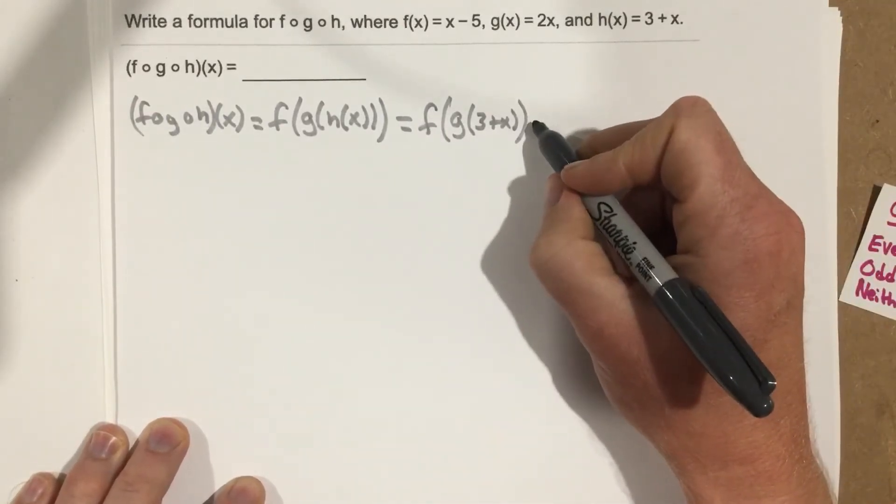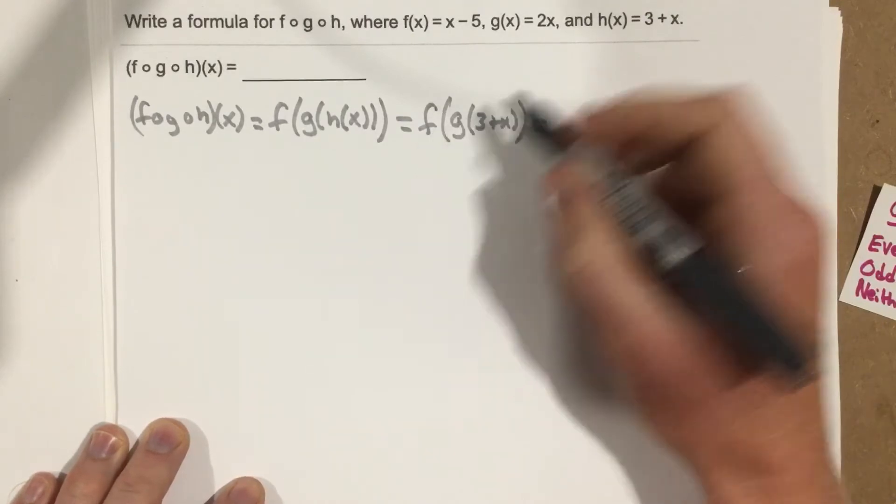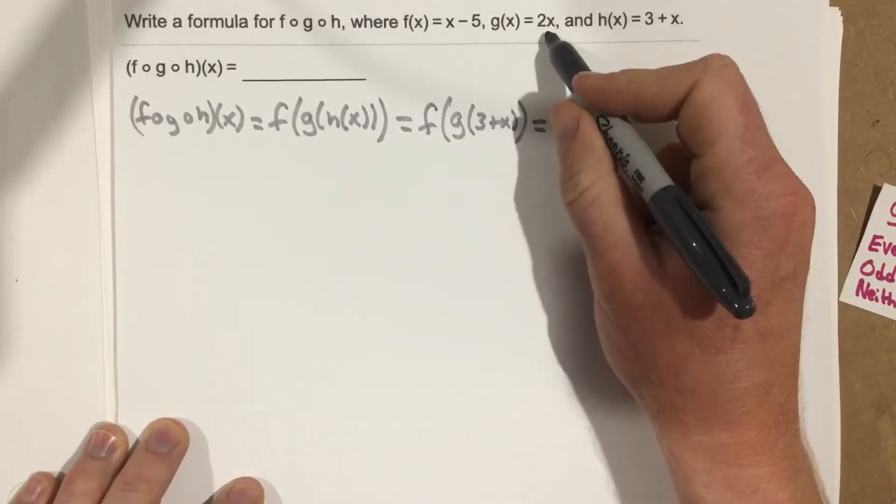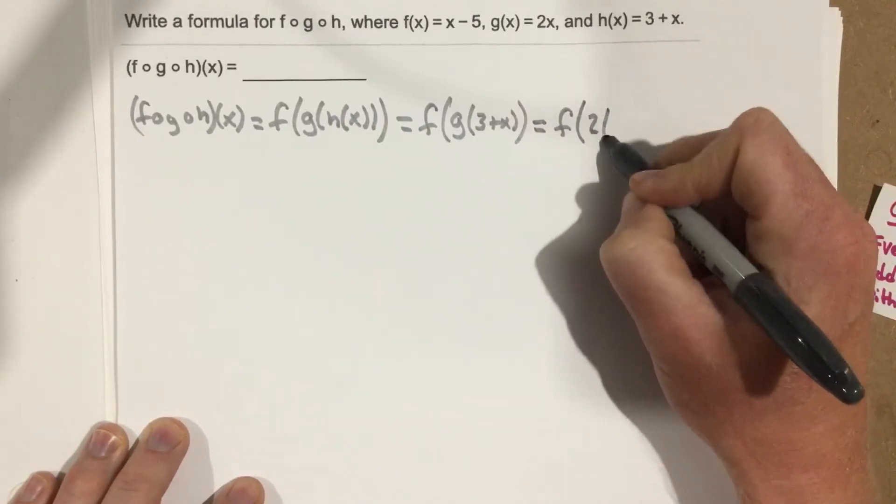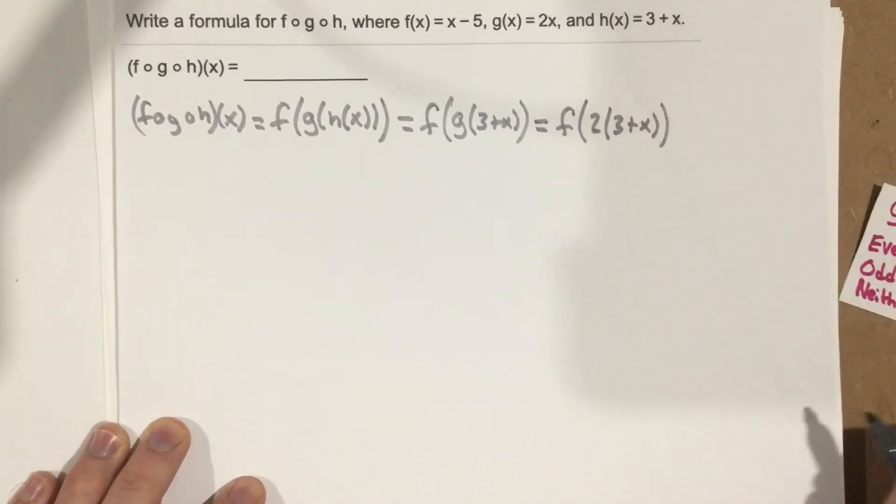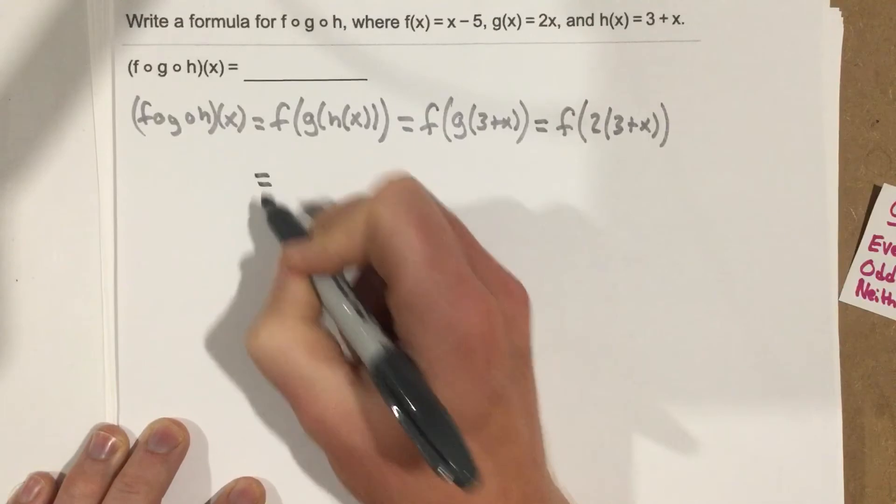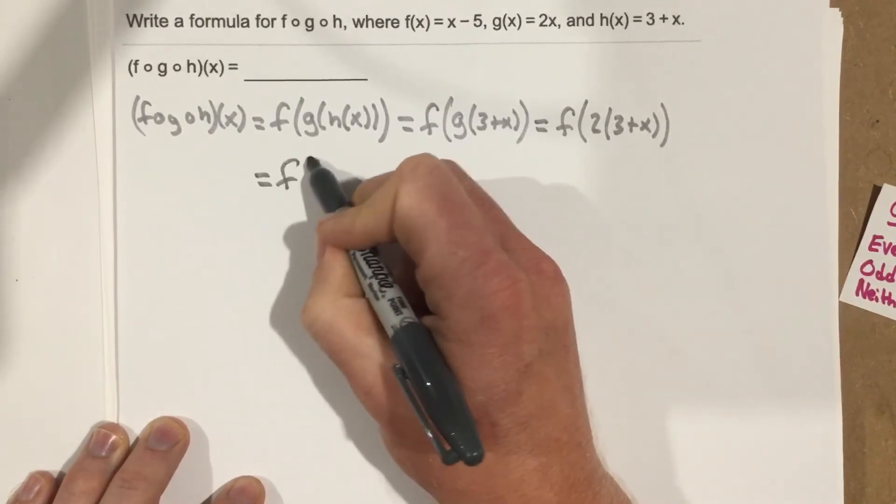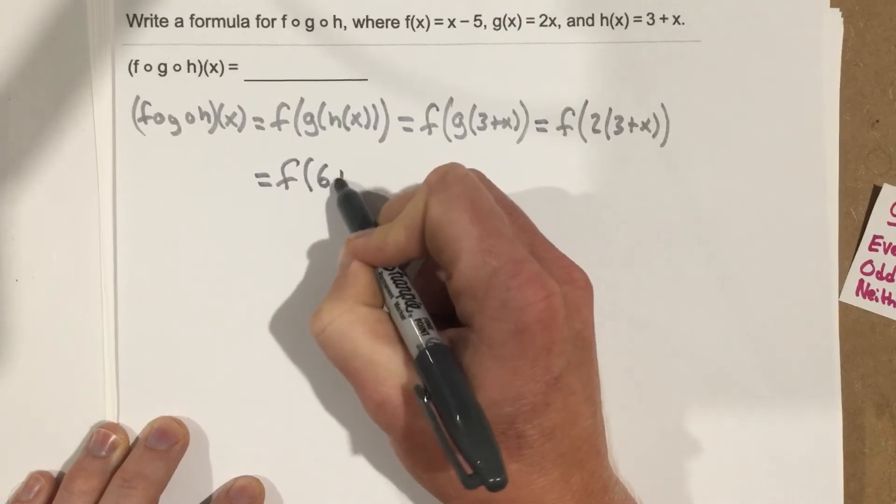And then I can write that as f. I'm taking 3 plus x, plug it into g of x, so that's f of 2 with 3 plus x plugged in there. So that is equal to, I take this, I'm going to distribute it, so that's going to be f of 6 plus 2x.